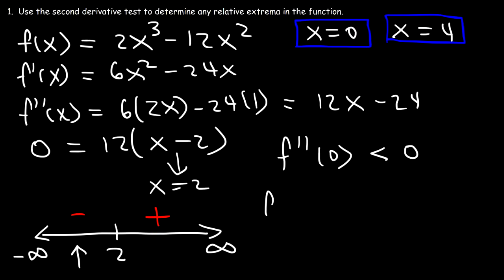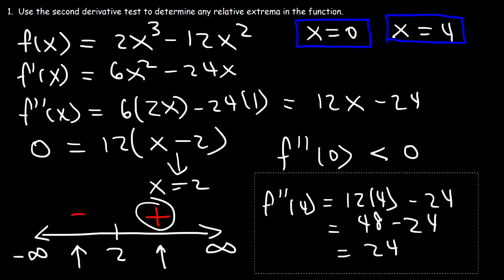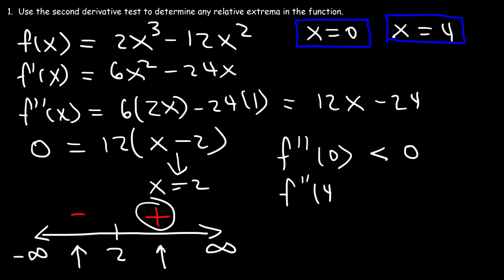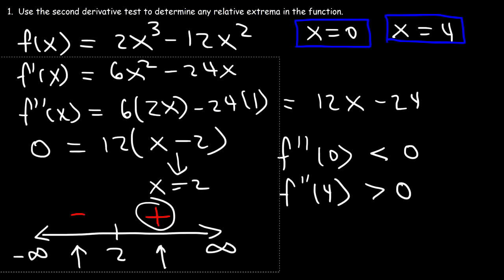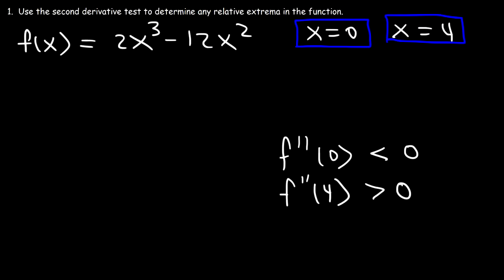Instead of using a sign chart, I can evaluate f''(4) directly. That's 12(4) - 24 = 48 - 24 = 24, which is positive. As you can see, 4 is between 2 and infinity, so that's positive as well. So f''(4) is greater than 0.